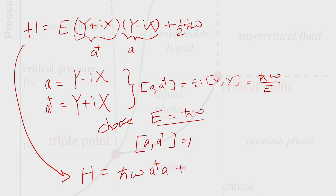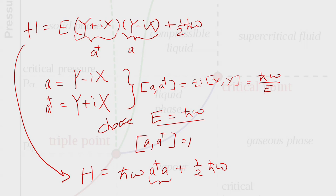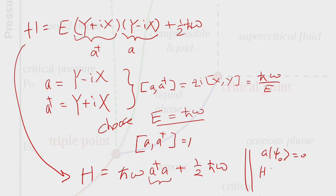With E = ħω, the Hamiltonian becomes H = ħω(a†a + ½). The operator a†a is self-adjoint and positive semi-definite — it is Hermitian with non-negative eigenvalues. The ground state is therefore the state annihilated by a: if a|ψ₀⟩ = 0, that state has the lowest energy. From the Hamiltonian, the ground state energy is directly seen to be ½ħω.